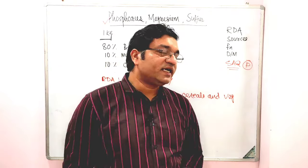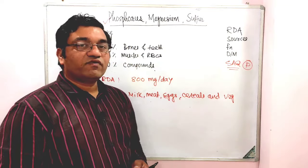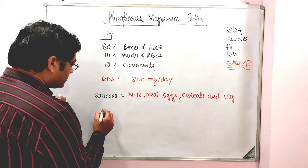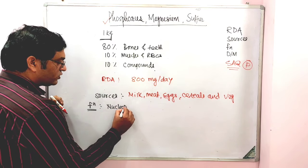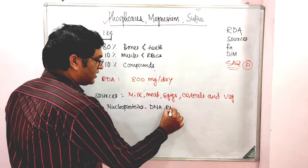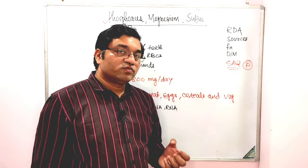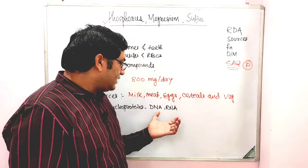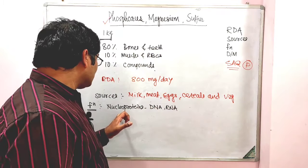Now coming to the biochemical functions — you may get a brief answer question on biochemical functions of Phosphorus. The important function of Phosphorus is that it is required for the synthesis of various compounds, which mainly includes nucleoproteins — DNA and RNA. Nucleotides are the building blocks for DNA and RNA, made up of sugar, nitrogen base, and phosphate. Polymerization of nucleotides in DNA and RNA occurs with the help of 3' 5' phosphodiester linkage.